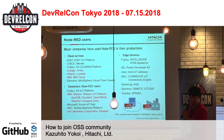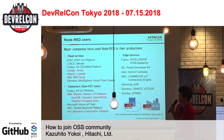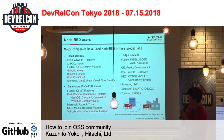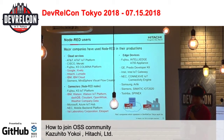Let me talk about who uses Node-RED. Major companies use Node-RED in their productions. There are three types of approaches. First is cloud services: AT&T, Cisco, Fujitsu, Google, Hitachi, IBM, and Siemens have their Node-RED environments on their cloud services. And the second is connectors: Fujitsu, IBM, Microsoft, NEC, and Expert published their connectors to connect to their services.